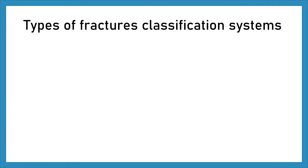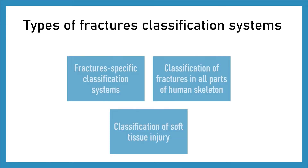Types of fracture classification systems: the first is fracture-specific classification systems; the second is classification of fractures in all parts of the human skeleton; and the last is classification of soft tissue injury.